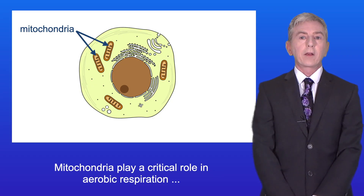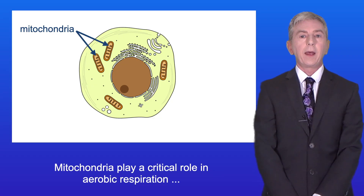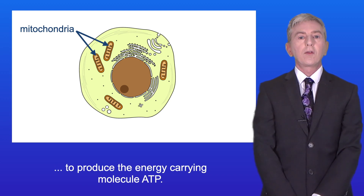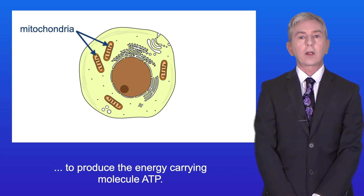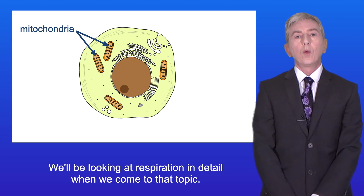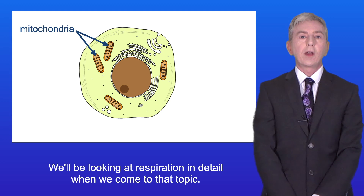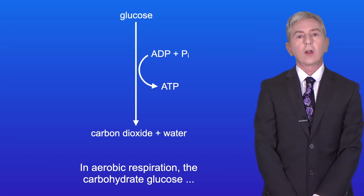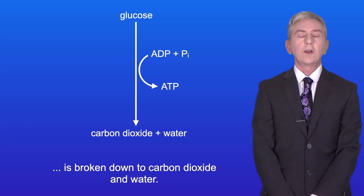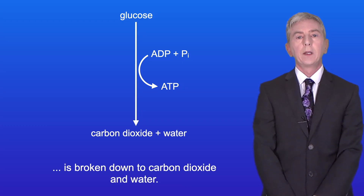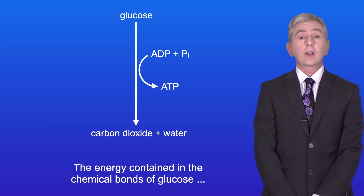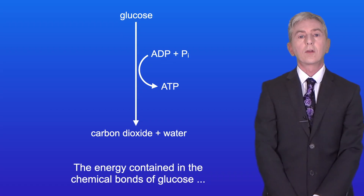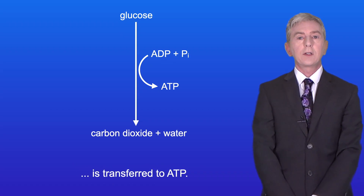Mitochondria play a critical role in aerobic respiration to produce the energy carrying molecule ATP. In aerobic respiration the carbohydrate glucose is broken down to carbon dioxide and water, and the energy contained in the chemical bonds of glucose is transferred to ATP.